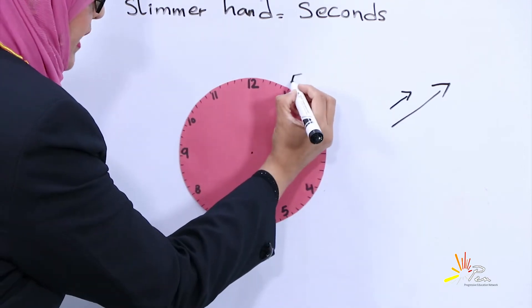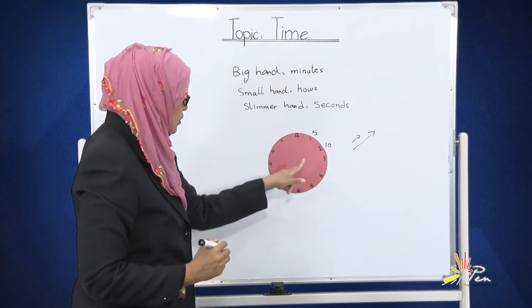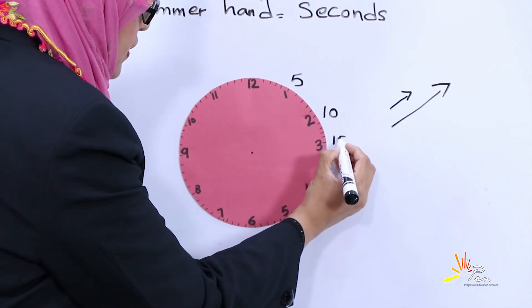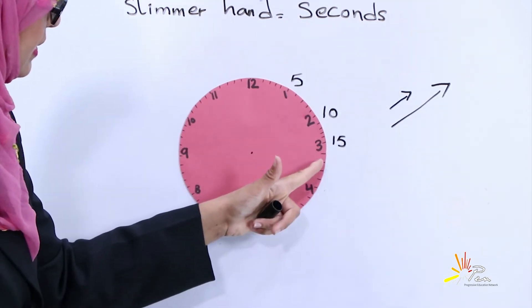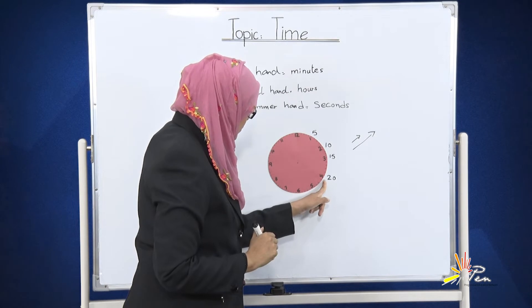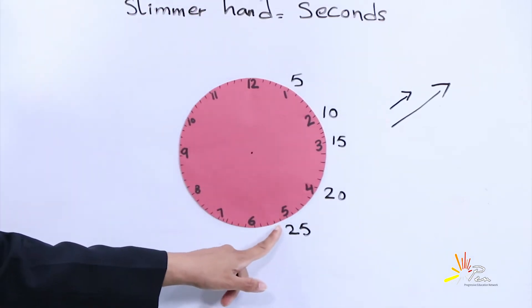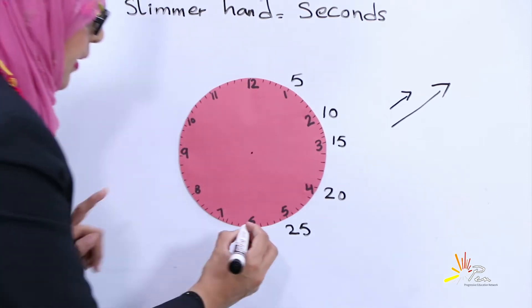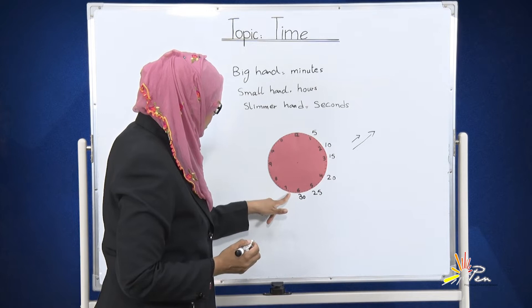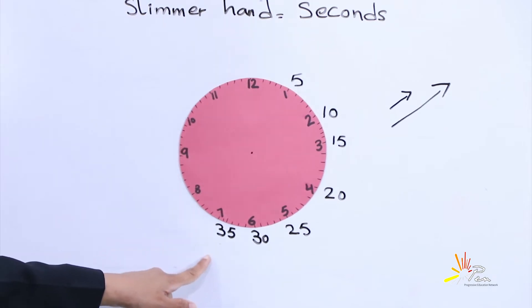We will see that every part has five lines in it. We can count them: 1, 2, 3, 4, 5. Here we will write 5. Then 6, 7, 8, 9, 10. Here we will write 10. 2 means 10 minutes. 11, 12, 13, 14, and 15. Count with me: 16, 17, 18, 19, and 20. 4 is equal to 20 minutes. 21, 22, 23, 24, and 25.